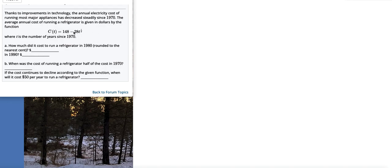Okay, so for this one we are given this equation that describes the cost of running a refrigerator in years since 1970. For the first part, we need to find the cost of running the refrigerator in 1980. So that means the cost, or since we're using function notation, cost evaluated at ten years.